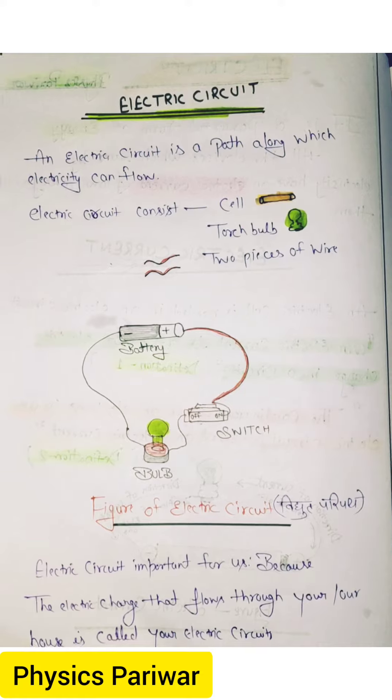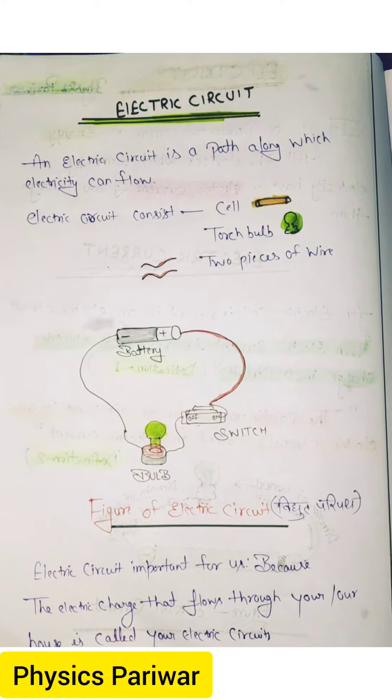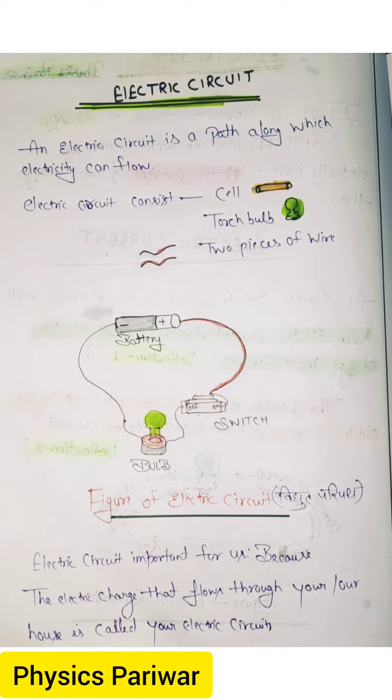An electric circuit consists of three parts: cell, torch bulb, and two pieces of wire. Here is the figure of electric circuit.